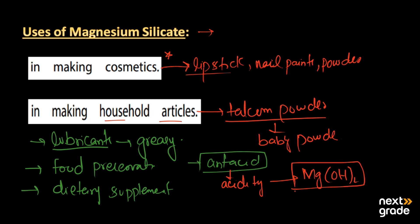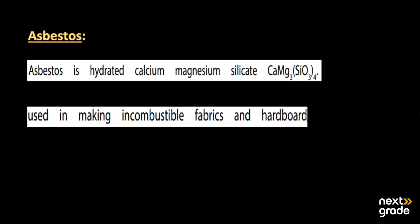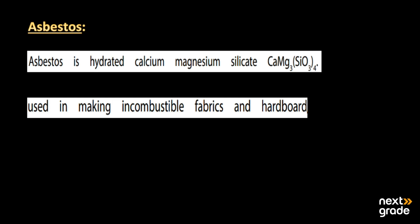The third type of silicate is asbestos. Asbestos is a hydrated calcium magnesium silicate, containing both calcium and magnesium along with silicon and oxygen. Its four components are calcium, magnesium, and silicon trioxide. Asbestos is mainly a naturally occurring fibrous silicate, also known as fibrous silicate.